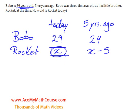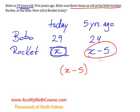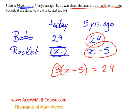Now what else do we know? We know that back then, five years ago, Bobo was three times as old as his little brother. So we can say that if we're comparing X minus five, which is Rocket's age five years ago, to the 24, we know that 24 was three times as big as X minus five, which was Rocket's age. So we put a three here: three times Rocket's age will equal 24, which was Bobo's age.